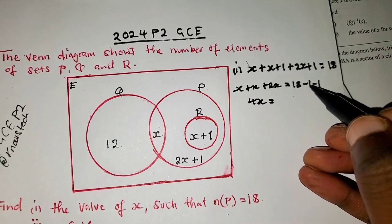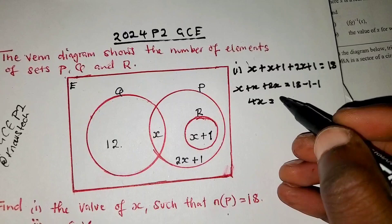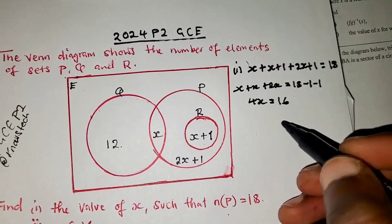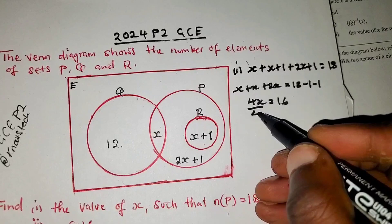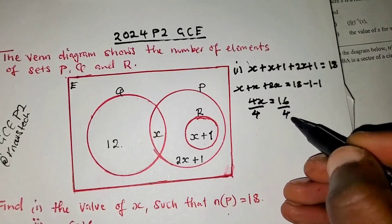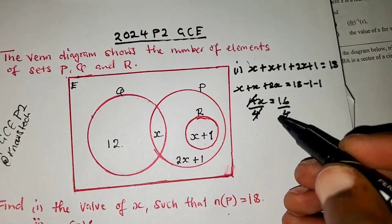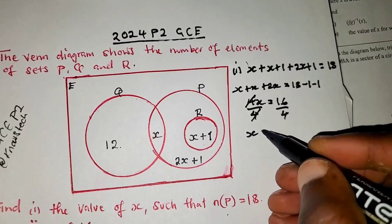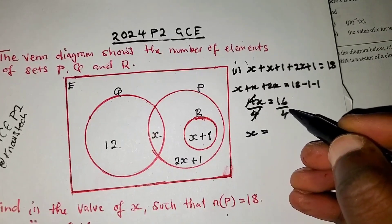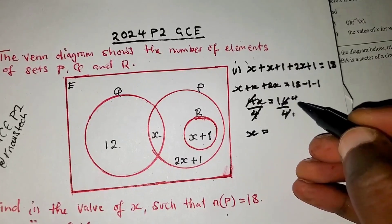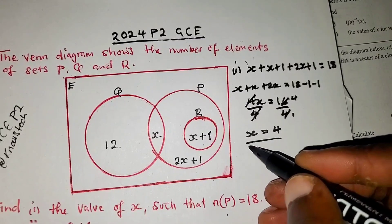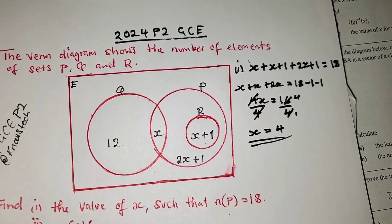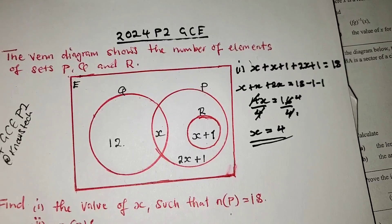Then 18 minus 1 is 17. 17 minus 1 is 16. So here is just 16. When you reach this stage, you divide both sides by 4. This 4 and this 4 cancel. Therefore, the value of x is equal to 4 into 16. 4 goes into 16 four times. So the value of x is 4. As simple as this.